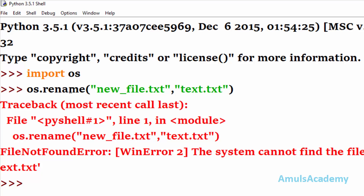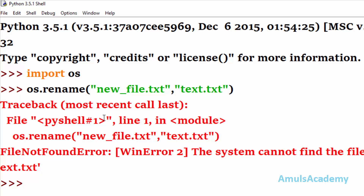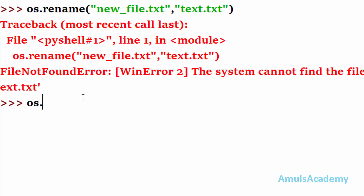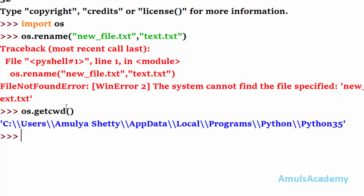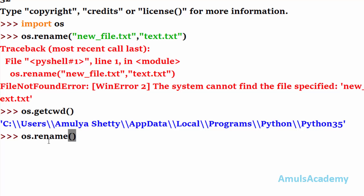That error occurs because whenever we use the rename method, it checks for the file in the current directory. If I use os.getcwd(), we can see the current directory — and 'new_file' is searched there, but this file is actually saved on the desktop, so we get the error. In this case we need to mention the full path of the file.